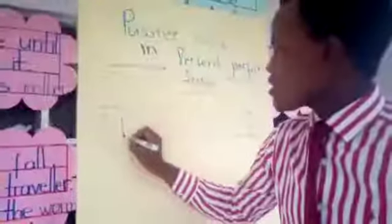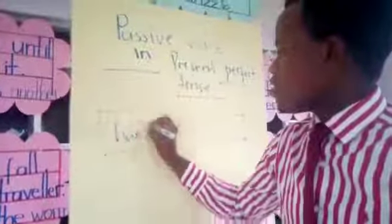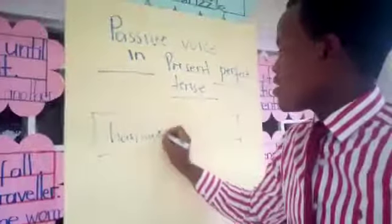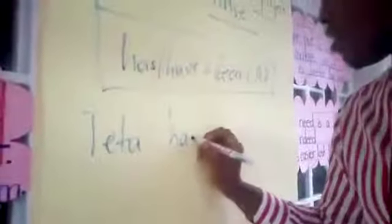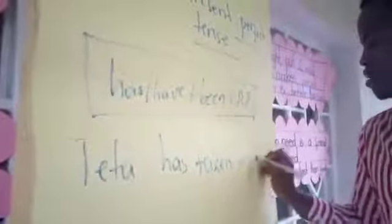The general rule is given like this: we use 'has' or 'have,' we add 'been,' then we add the past participle of the given verb. For example, I can say: 'Theta has taken my book.'